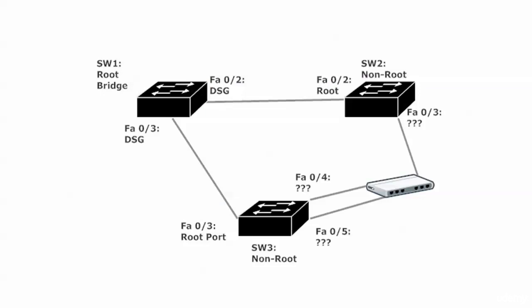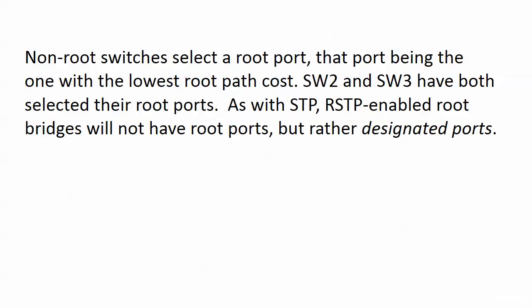The election is really the same — switch one is the root. We know the root bridge is never going to have root ports, and all of the ports on the root bridge will be in forwarding mode. So both Fast Ethernet 2 and 3 on switch one are designated ports and they are forwarding. Switch two has chosen its root port, so has switch three, but we have three other ports connected to a hub where we need to figure out the port roles. The non-root switches first select their root port, which they've already done, and then the RSTP-enabled switches will have designated ports just like STP.